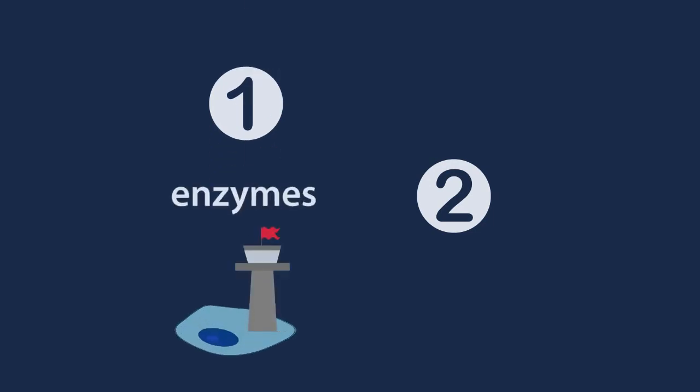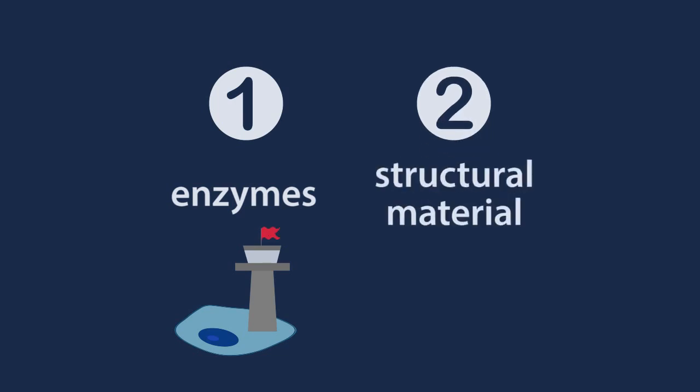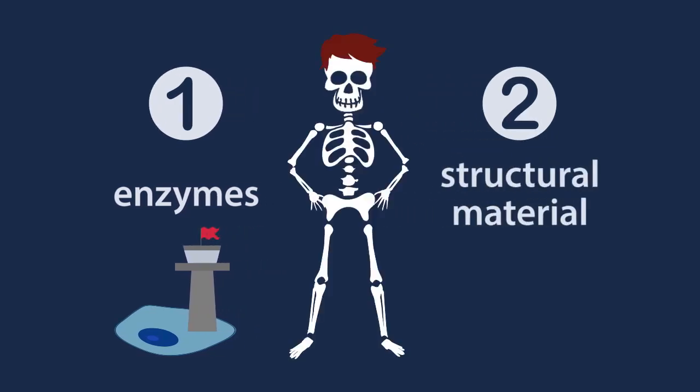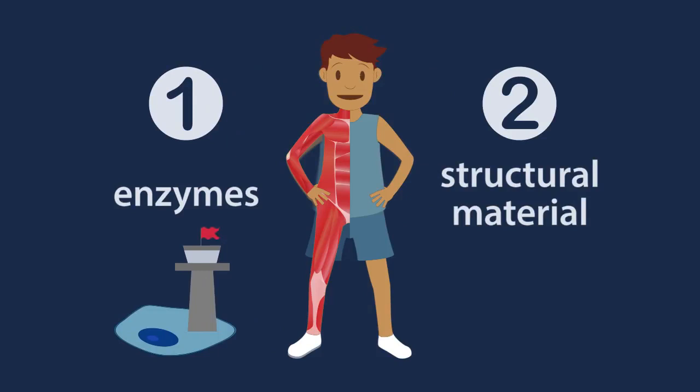Proteins have two major functions in living things. They are the enzymes that control all the reactions that take place in the cells of all living things, and they form the structural material in animals: head, bones, skin, muscles, and the vital organs.